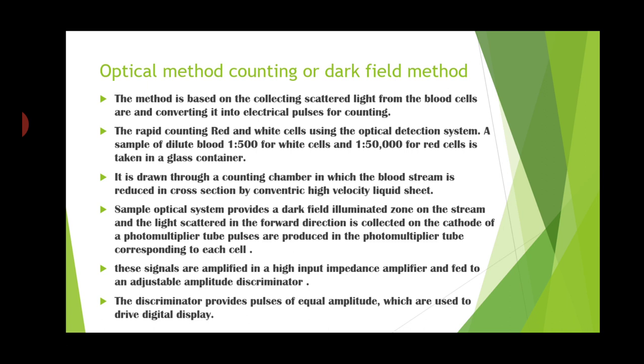The optical system provides a dark field illuminated zone on the stream, and the light scattered in the forward direction is collected on the cathode of the photomultiplier tube, which generates electrical pulses. The scattered light falls on the cathode of the photomultiplier, where light pulses are converted into electrical pulses. These signals are amplified in a high input impedance amplifier and fed to an adjustable amplitude discriminator.